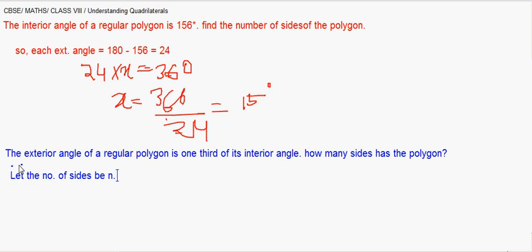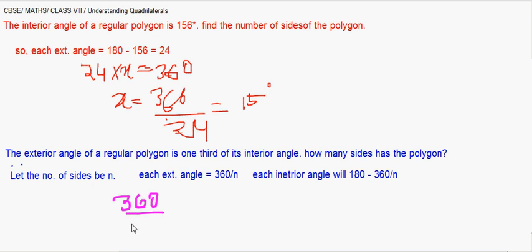So if there is n number of sides, each exterior angle will then be 360 divided by n. This is each exterior angle. So each interior angle will be 180 minus 360 by n. Now it also informs us that exterior angle is equal to one third of the interior angle.